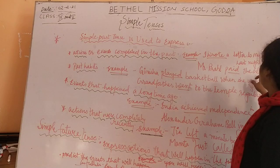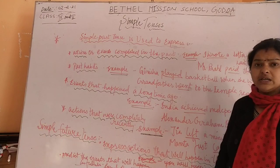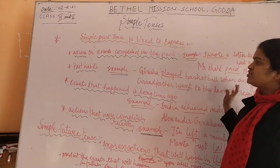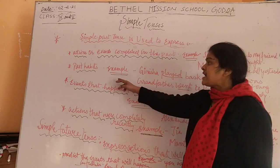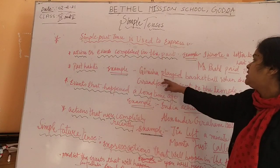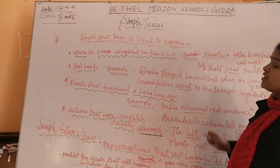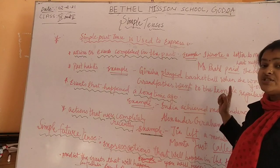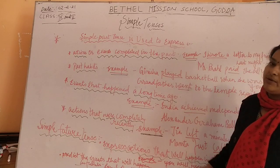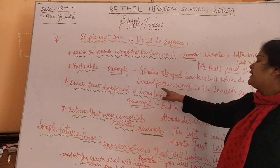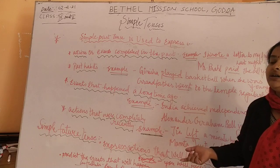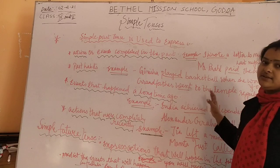Second example: Mr. Bahar paid the bill yesterday — Mr. Bahar had paid the bill yesterday, so the action or event took place in the past. Past habits: simple past tense is used in the sentence to show past habits. For example, Garisha played basketball when she was young. Grandfather went to the temple regularly — grandfather was going to the temple regularly but now things have changed.